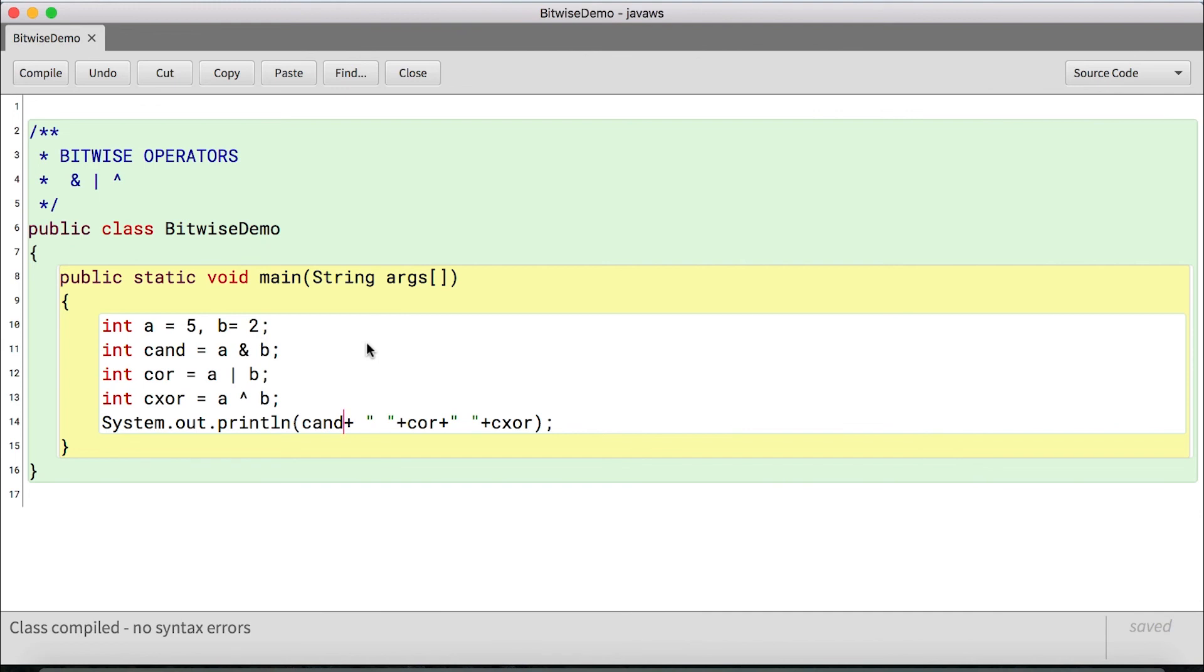You can try out the same by providing different values in A and B and you can calculate as you've already learned the binary number system and how binary is converted to decimal and vice versa. The link for the assignment on bitwise operators is provided in the description. Do not forget to test yourself if you have understood the concept on bitwise operators. With this, we come to an end of this video. Happy learning. Take care and bye-bye.